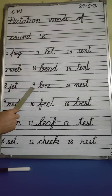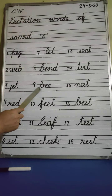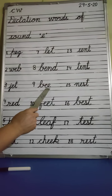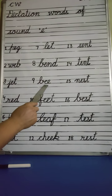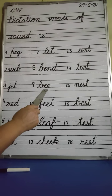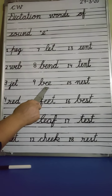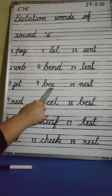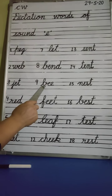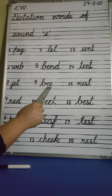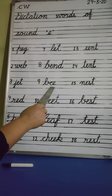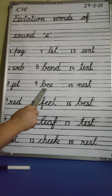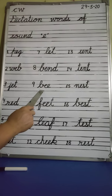Number 9. B, double E — here we have double E, so when we speak this word we will give some pressure. B, double E — Bee. What is this? B, double E — Bee. Bee means honey bee, Madhu Makhi. Okay.